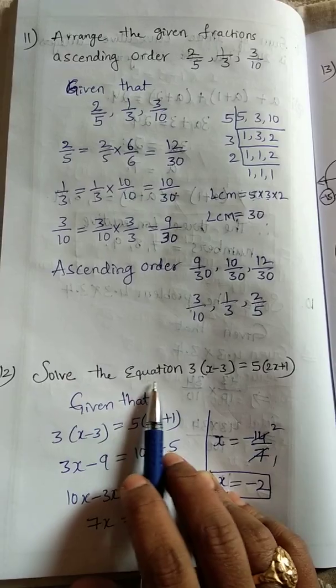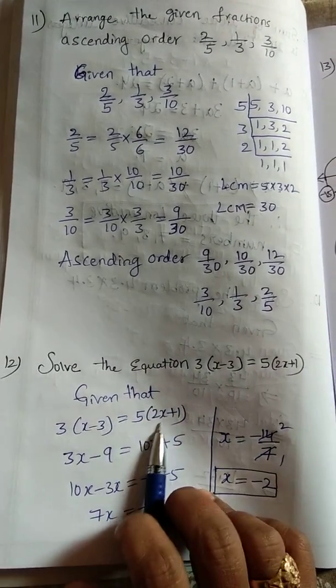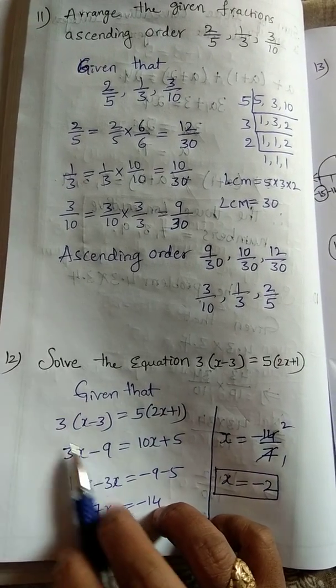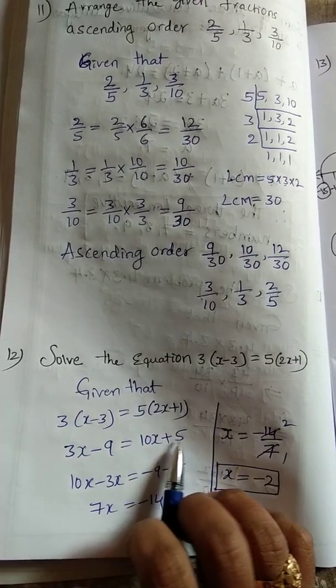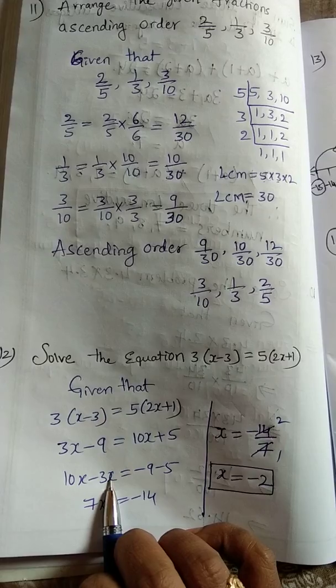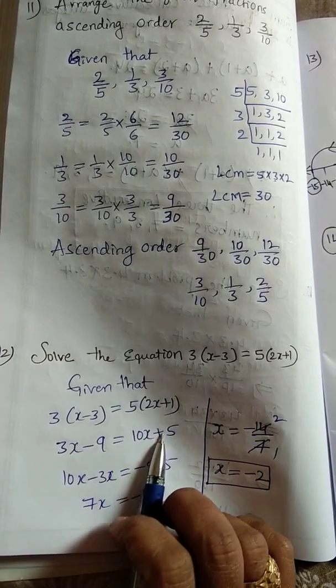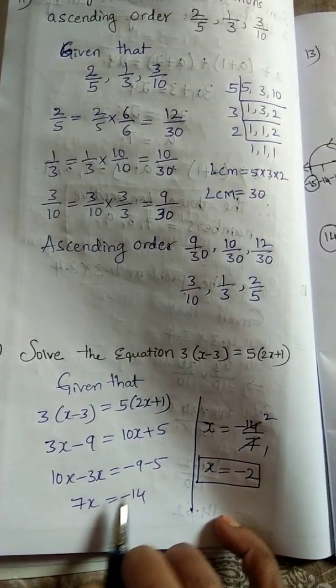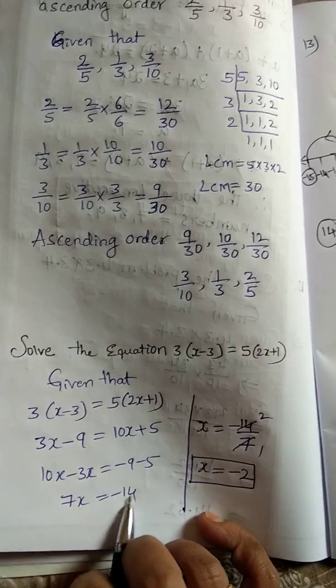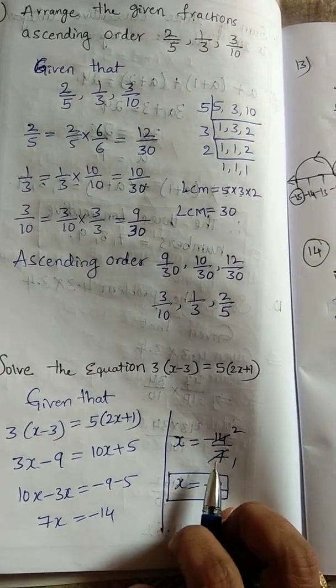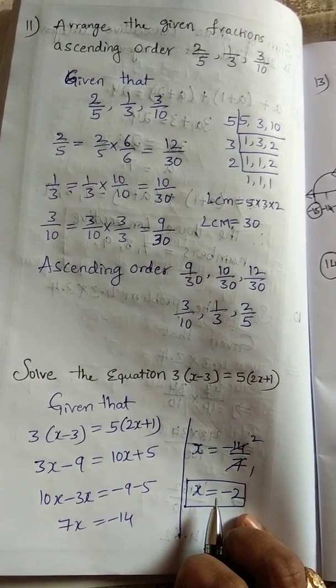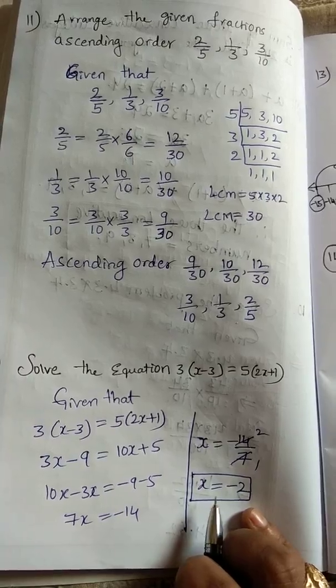Twelfth question: solve the equation. Here given equation. We multiply inside the bracket: 3x minus 3 times 3 is 9, equals 10x plus 5. 10x minus 3x equals minus 9 minus 5. 7x equals minus 14. x is equal to minus 14 by 7. 7 twos are 14, so x is equal to minus 2. Like this we can find the x value.